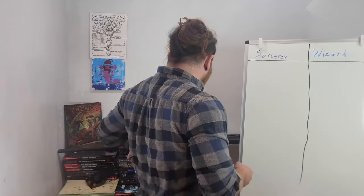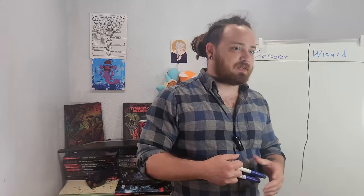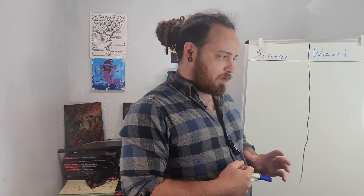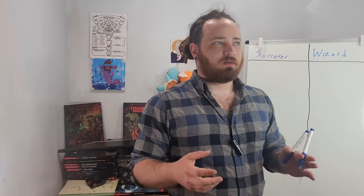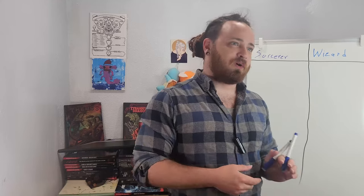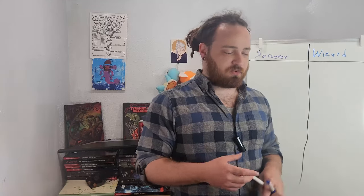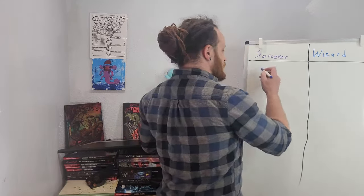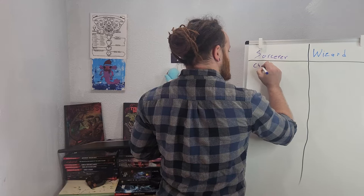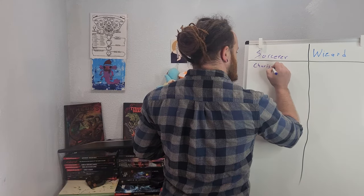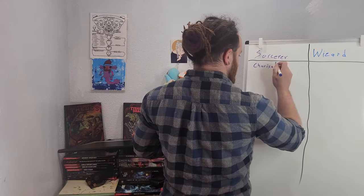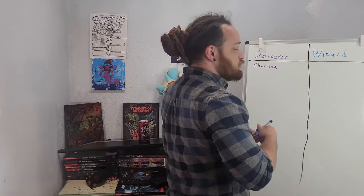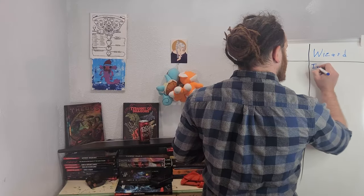The first thing we need to look at is something that's not inherently combat-oriented, and that's skill proficiencies. When it comes to skill proficiencies, the better class is going to be whichever one has the highest stat, or the highest attribute, for the better skill proficiencies. Charisma is going to be Sorcerer's highest stat because it's its spellcasting modifier. Whereas, Wizard's spellcasting modifier is Intelligence, so it should be the highest stat.